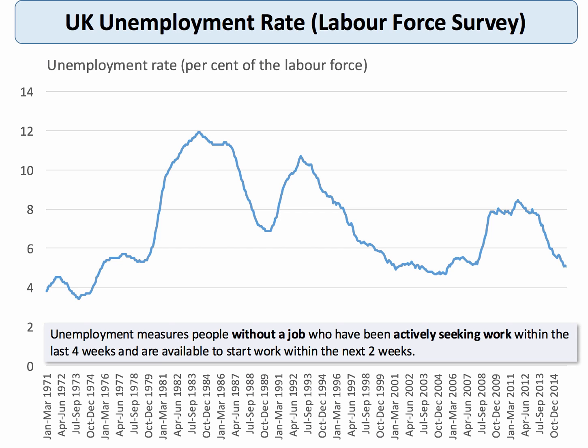The unemployment rate in the UK is measured by the Labour Force Survey, which is a monthly survey of around 40,000 households who have provided information on their employment status. The unemployment rate is a percentage of the labour force, and the LFS measure tracks unemployment as people who are without a job, who have been actively looking for work in the last month, and who can start work within the next fortnight. You can see there are significant peaks of unemployment in the early 80s, early 90s, and again during the last recession.